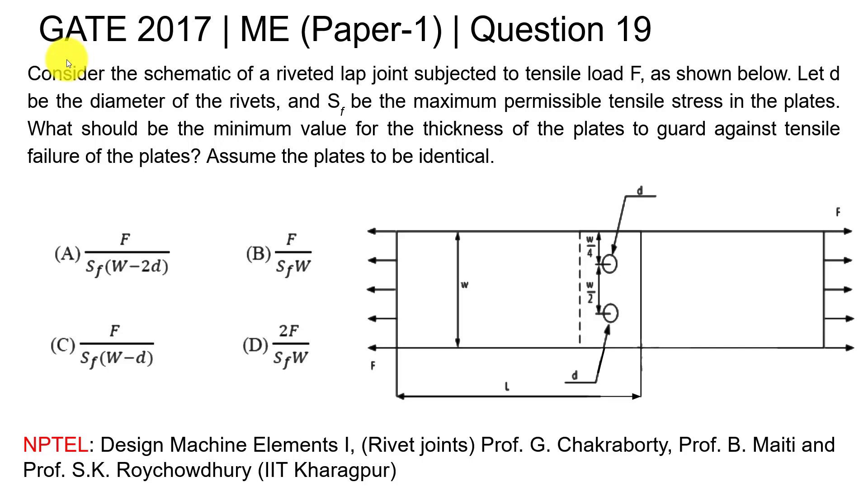Hi all, today we are going to see a question from GATE 2017 Mechanical Paper 1, question number 19. You are given a riveted lap joint system, and its parameters are given.